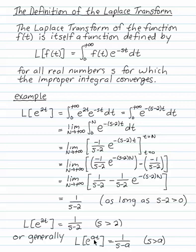For example, if a was negative 3, Laplace transform of e to the negative 3t is 1 over s plus 3. Pay attention to your signs.